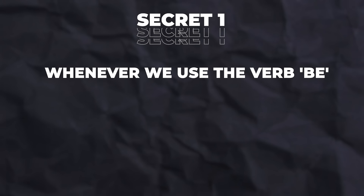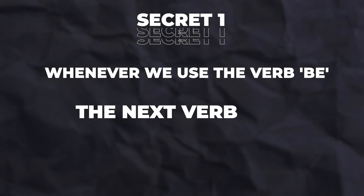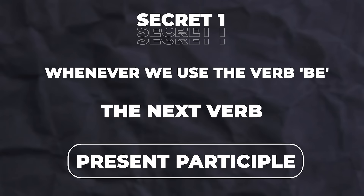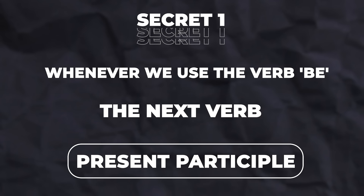The first secret is: whenever you have a be verb, after the be verb, if there is any verb, that verb has to be present participle. Agar be verb ke baad kabhi bhi koi bhi verb aata hai, usse present participle hona padega. This is our first formula. Be verb includes: is, am, are, was, were — any be verb. Any be verb comes, the next verb has to be present participle.